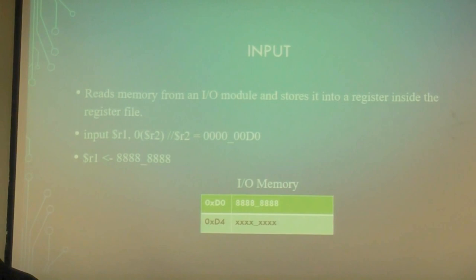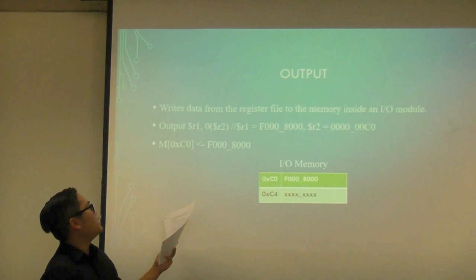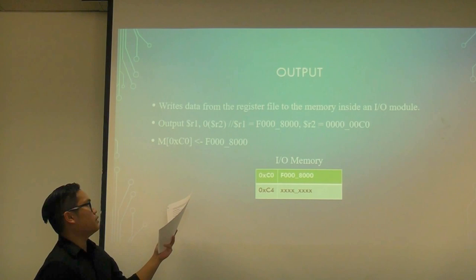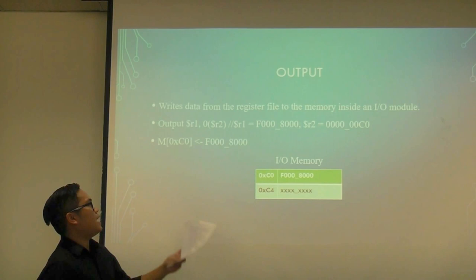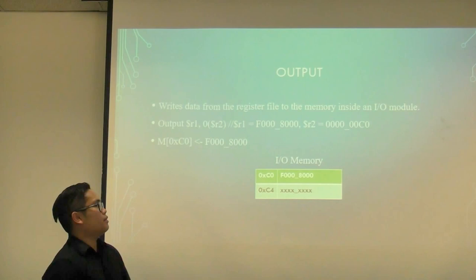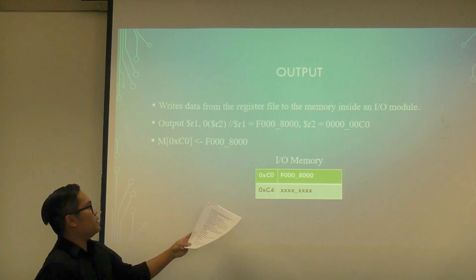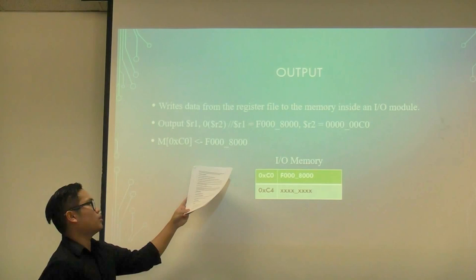We also have output, and output writes data from the register file to the memory inside an IO module. In this example we have output, register one, with the offset of zero and a base pointer of register two. R1 has a value of F000 and register two has the value of hex C0. First, we get the base pointer plus the offset — that will be the address in memory where you store the value of R1.